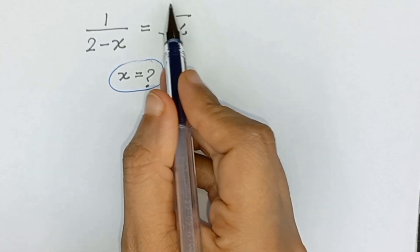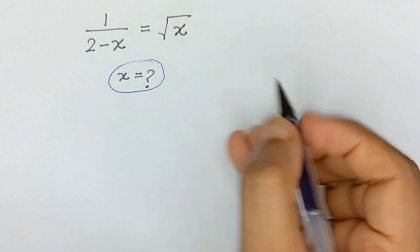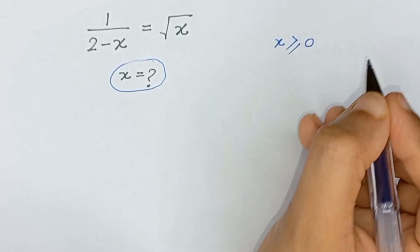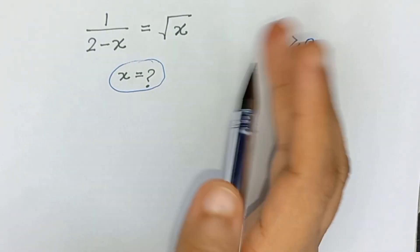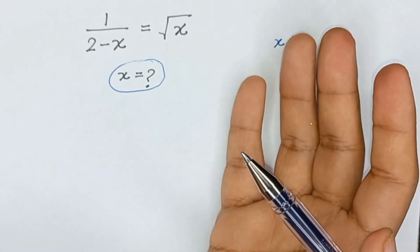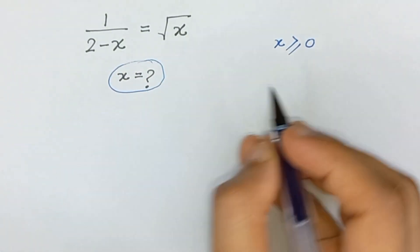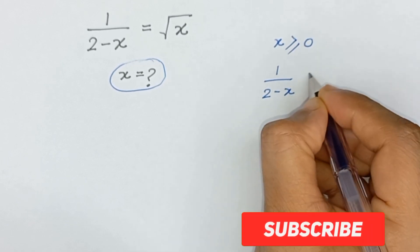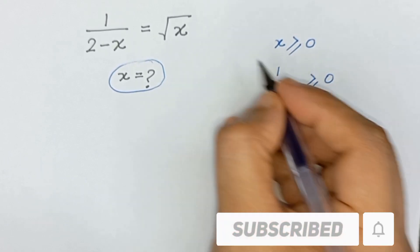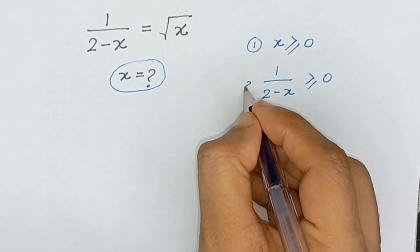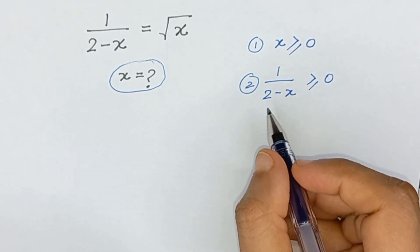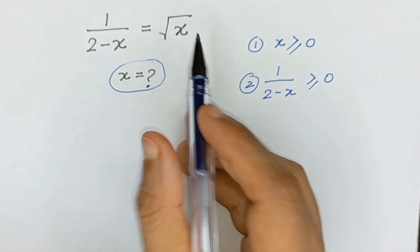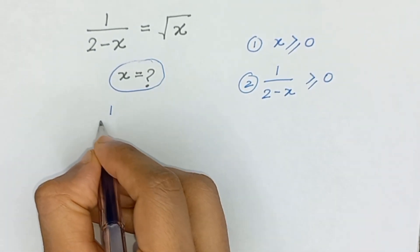Since x is under the square root sign, x must be greater than or equal to 0. Also, since the right hand side is greater than or equal to 0, the left hand side must also be greater than or equal to 0, so 1 divided by 2 minus x should be greater than or equal to 0. We will use these two conditions to check the solution of this equation.